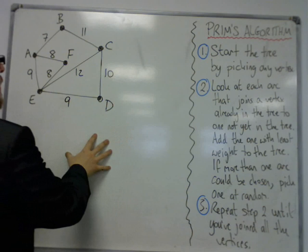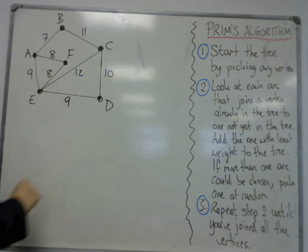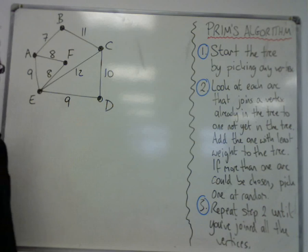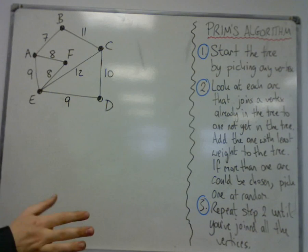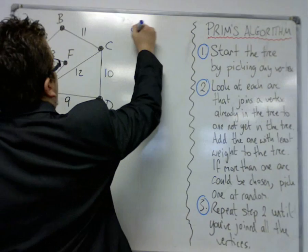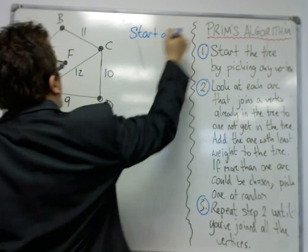So here is a graph, a network rather, that we're going to find the minimum connector for, minimum spanning tree. So let's say we're starting at A. We've been told to start at A.